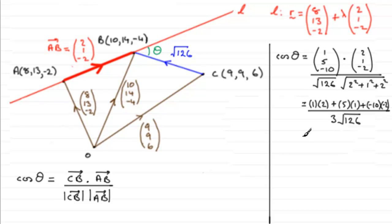Now if you work this out, you've got 2 plus 5 plus 20 on the top there. That's going to come to 27. So it's 27 over 3 root 126. And if you clean this up, it actually comes to 3 over the square root of 14. That's the exact value.